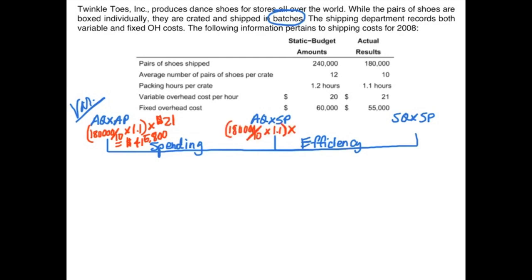To find the middle peg, actual quantity is again 180,000 divided by 10 to get the number of crates, times 1.1 hours per crate. For the middle peg, we multiply that actual quantity by our standard price of $20 per hour. So actual quantity times the standard price of $20 gives us a middle peg value of $396,000.